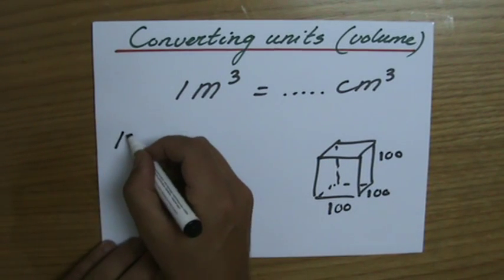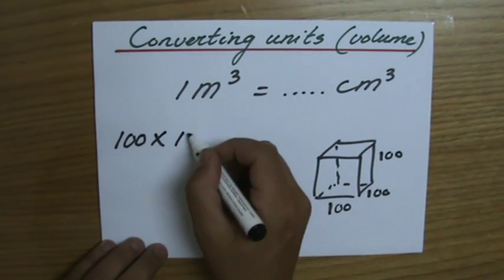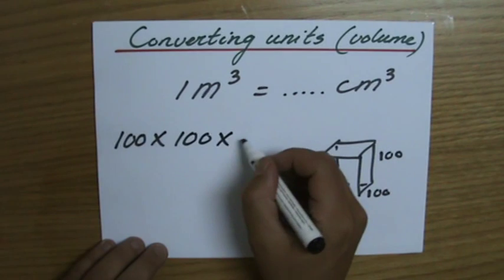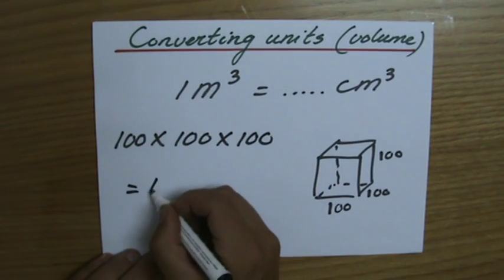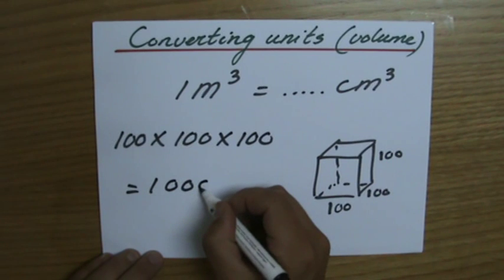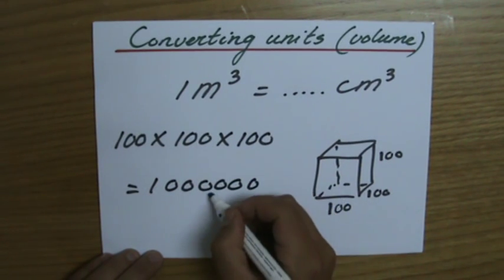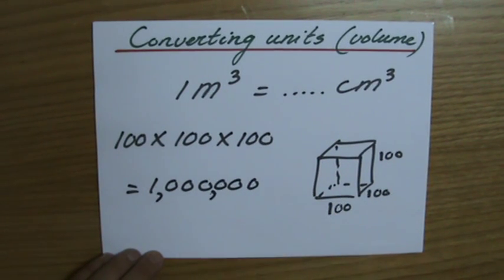I have to do 100 centimeters times 100 centimeters times 100 centimeters. And that's 2, 3, 4, 5, 6, 1 million centimeter cube.